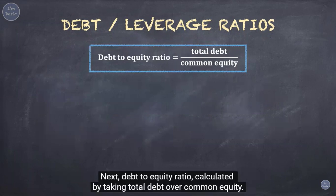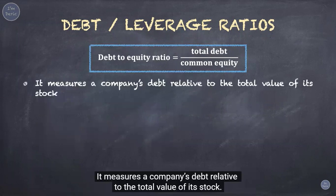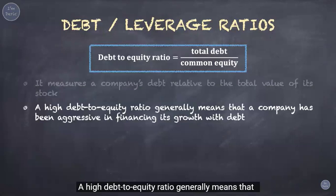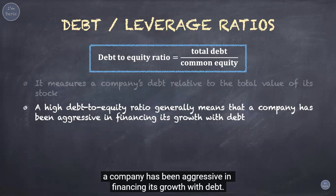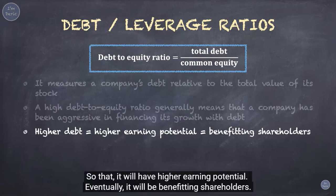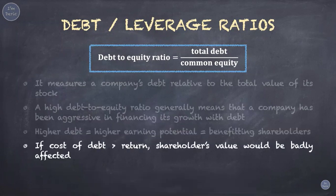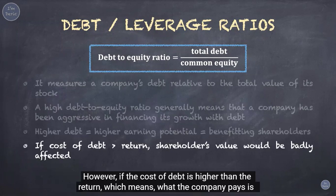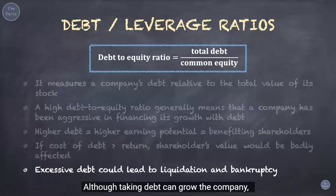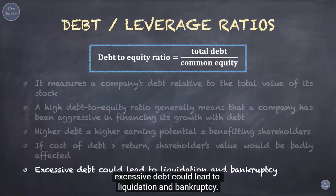Next, debt to equity ratio is calculated by taking total debt over common equity. It measures a company's debt relative to the total value of its stock. A high debt-to-equity ratio generally means the company has been aggressive in financing its growth with debt. By taking on higher debt, the company can invest in more projects and have higher earning potential, which can eventually benefit shareholders. However, if the cost of debt is higher than the return — meaning the company pays more than it earns — shareholder value would be badly affected. Although debt can grow a company, excessive debt could lead to liquidation and bankruptcy.